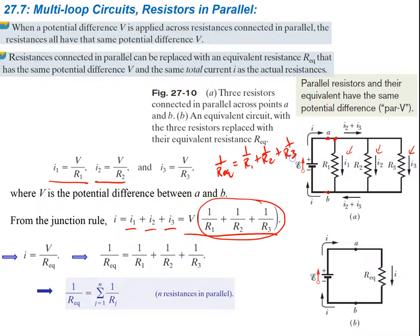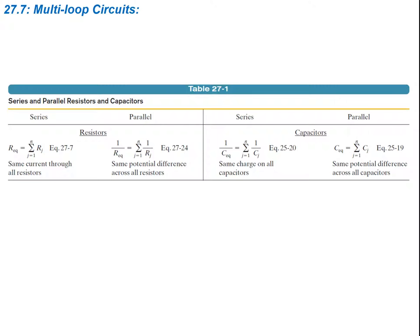That's what they show down here. The equivalent resistance is found by adding up all the different resistors in parallel — using reciprocals. To summarize all the rules: resistors in series you just add together — R1 plus R2 plus R3. Resistors in parallel you take the reciprocal. Capacitors are the opposite: capacitors in series you take the reciprocal to find the equivalent, and in parallel you just add them all together.